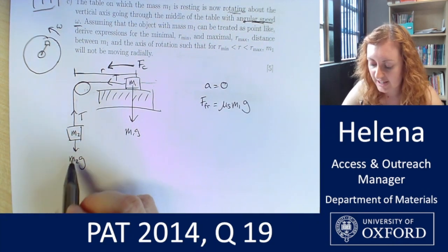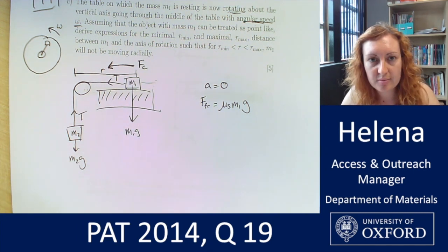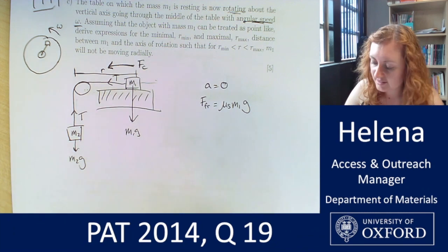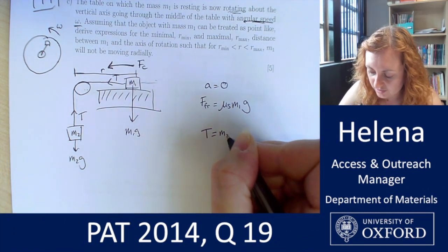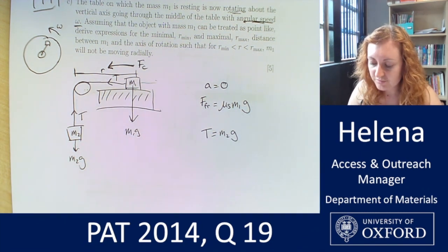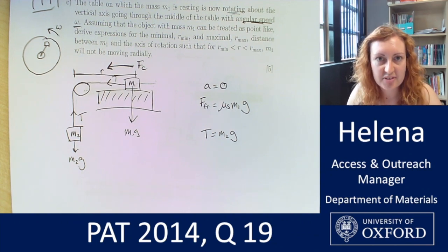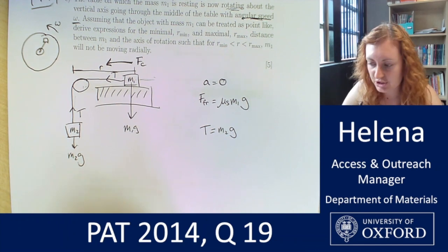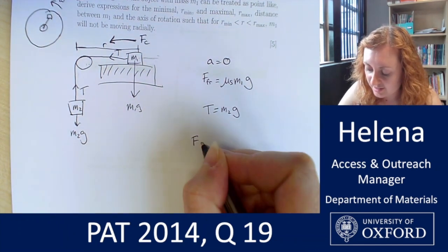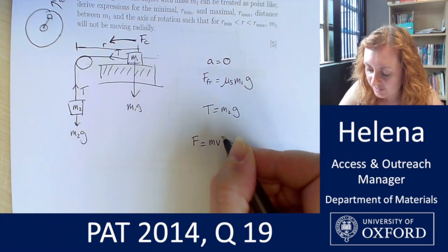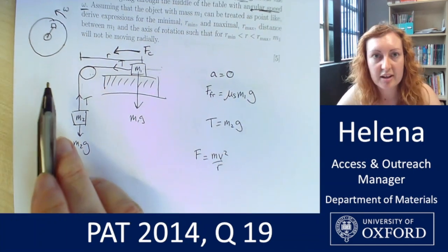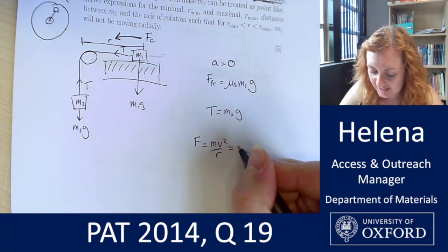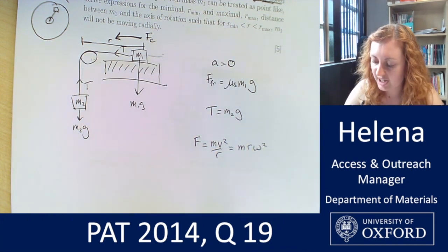We can also look at the forces on our block two, and again with no acceleration, these forces will be balanced. So we have that T is equal to M2 g. Now the other force that we're going to have to think about is this net force due to the circular motion, which hopefully you remember is of the form mv squared over r, or if we're thinking about angular speeds rather than linear speeds, that can be written as mr omega squared.